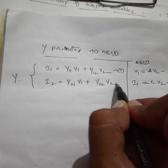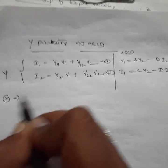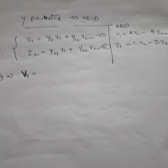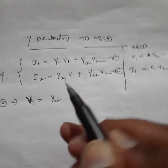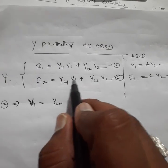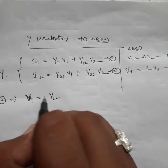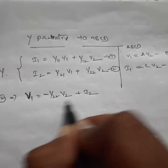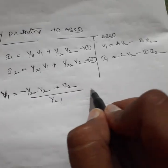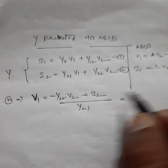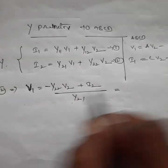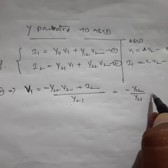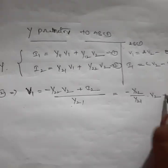From equation number two, I calculate v1. So v1 equals y22·v2 plus i2, divided by y21. That means v1 equals minus y22 by y21, into v2, plus i2 by y21.